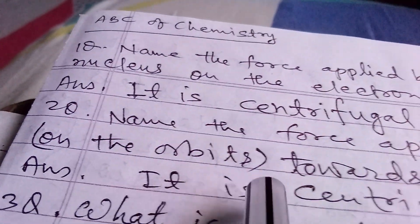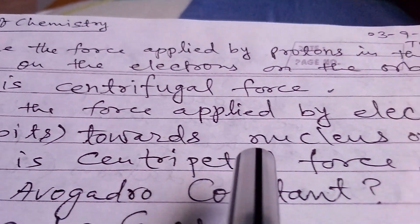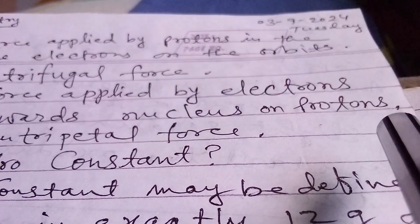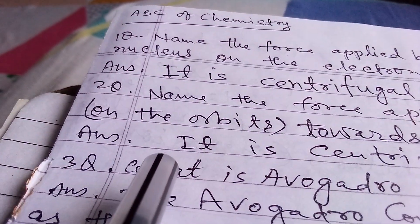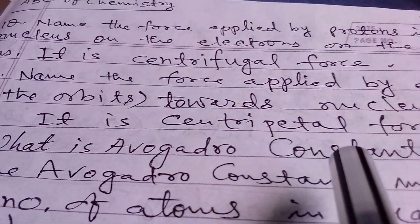Second question: Name the force applied by electrons on the orbits towards nucleus on protons. Answer: It is centrifugal force.